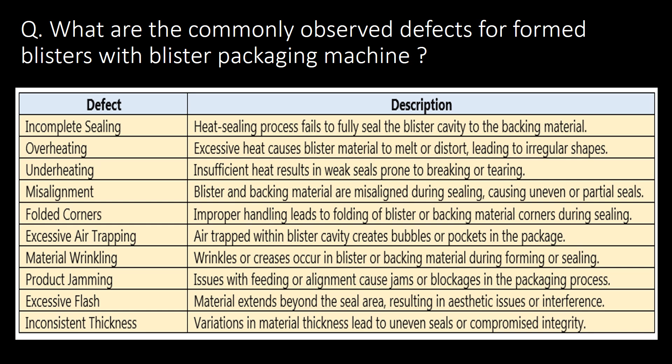What are the commonly observed defects for formed blisters with a blister packaging machine? Incomplete sealing, overheating, underheating, misalignment, folded corners, excessive air trapping, material wrinkling, product jamming, excessive flash, and inconsistent thickness are the commonly observed defects for formed blisters.